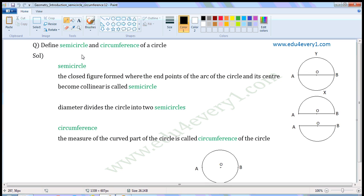Define semicircle and circumference of a circle. Semicircle: The closed figure formed where the endpoints of the arc of the circle and its center become collinear is called semicircle.